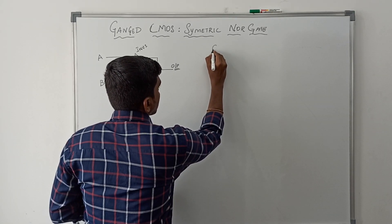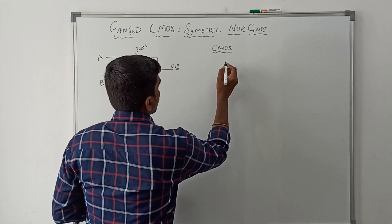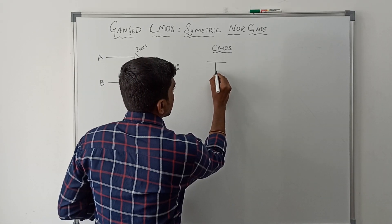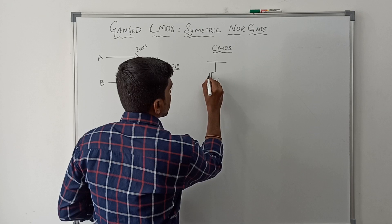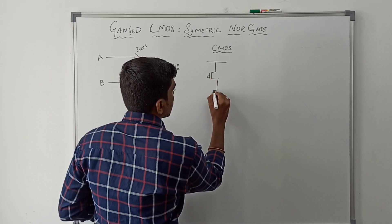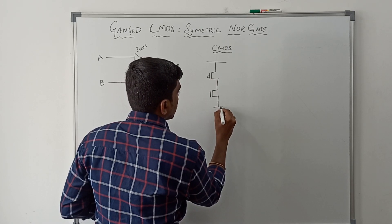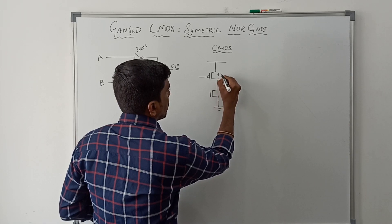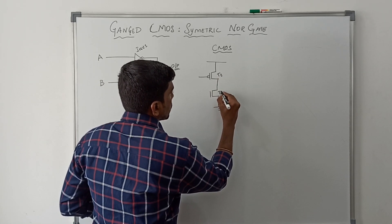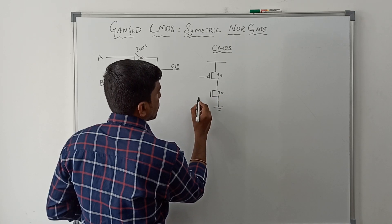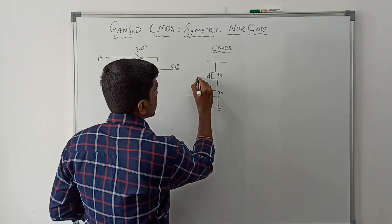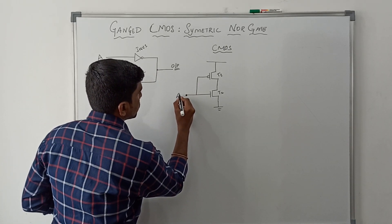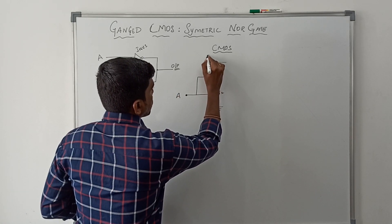Now I am going to draw the CMOS structure for this logic operation. This is the first inverter CMOS structure. In this structure we have two transistors: the first transistor is a PMOS transistor, namely called T1, and the second one is an NMOS transistor, namely called T2. The input of this CMOS inverter is A. This is the structure of inverter one.